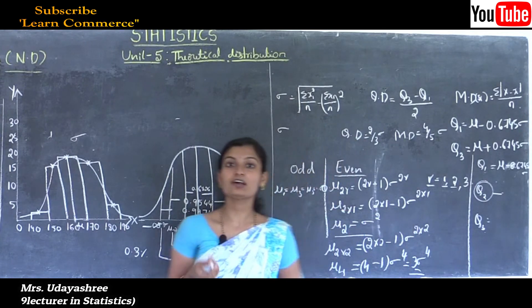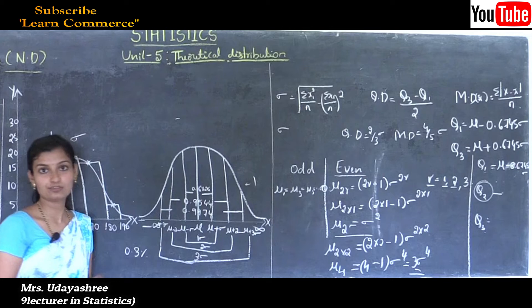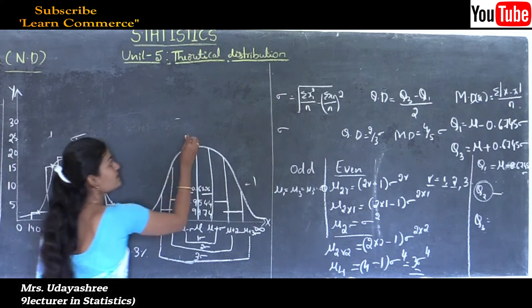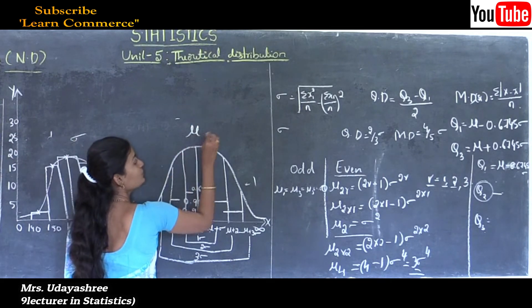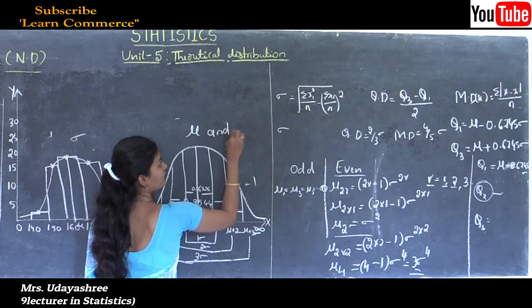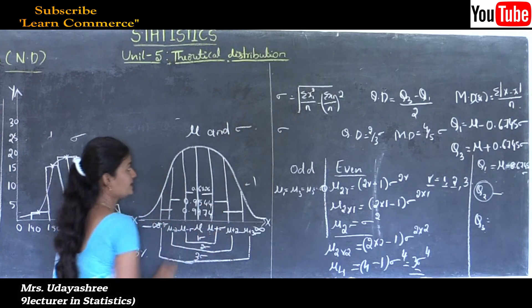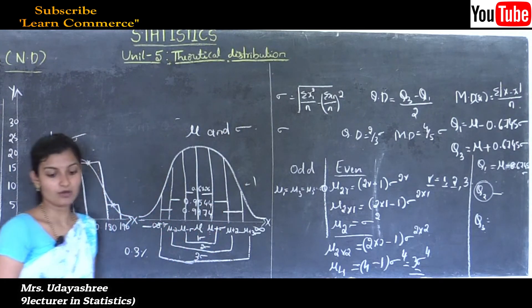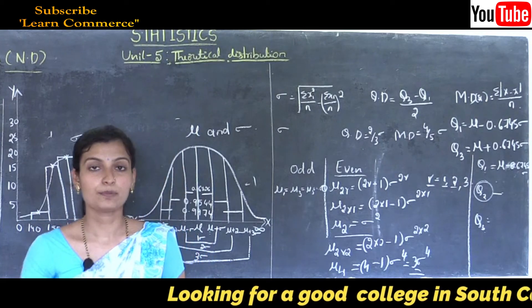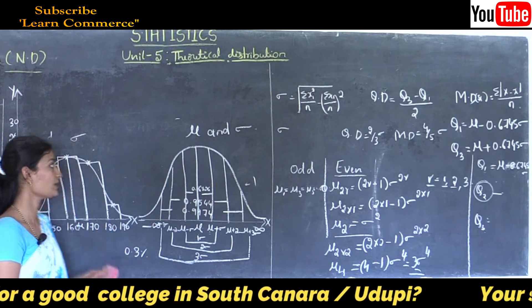The parameters of normal distribution are mu (mean) and sigma (standard deviation). These are the important properties of normal distribution.